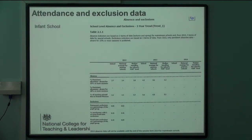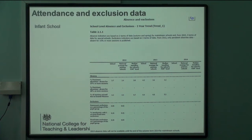In the report you've also got attendance and exclusion data — in the unvalidated report you haven't got this year's data. For persistent absence at 15% or more sessions, the school is at 4.5, the national average for primary schools is 3.6, but the median trend line for free school meals level is 4.2. In other words, the free school meal trend line is slightly higher than the national, so it doesn't look quite as bad against the free school meal level as it does against the national. The overall attendance is slightly lower than the national, but slightly better than the sort of trend line for the free school meal equivalent.